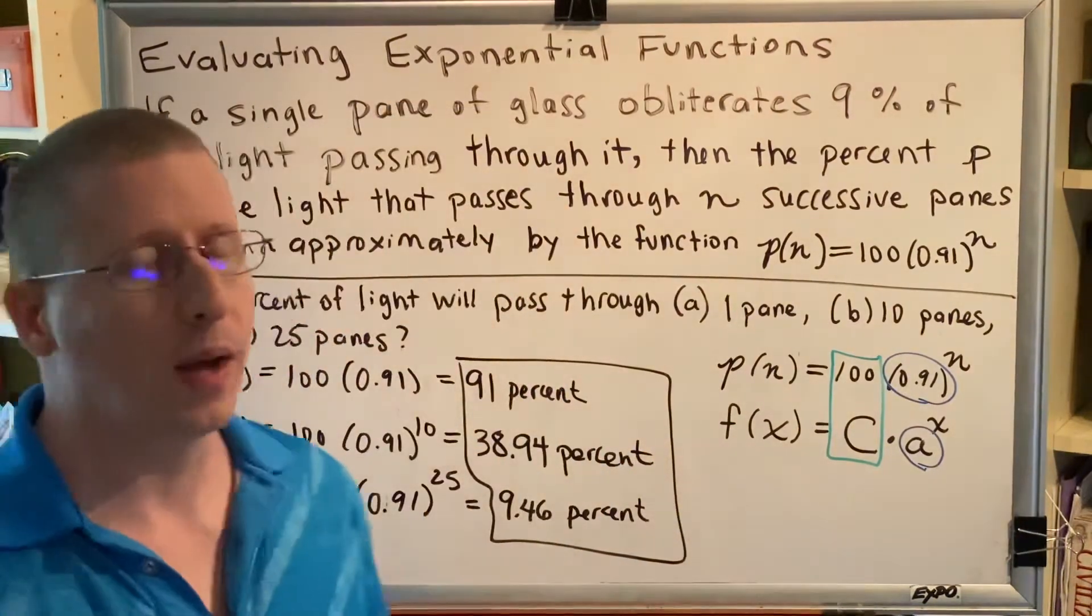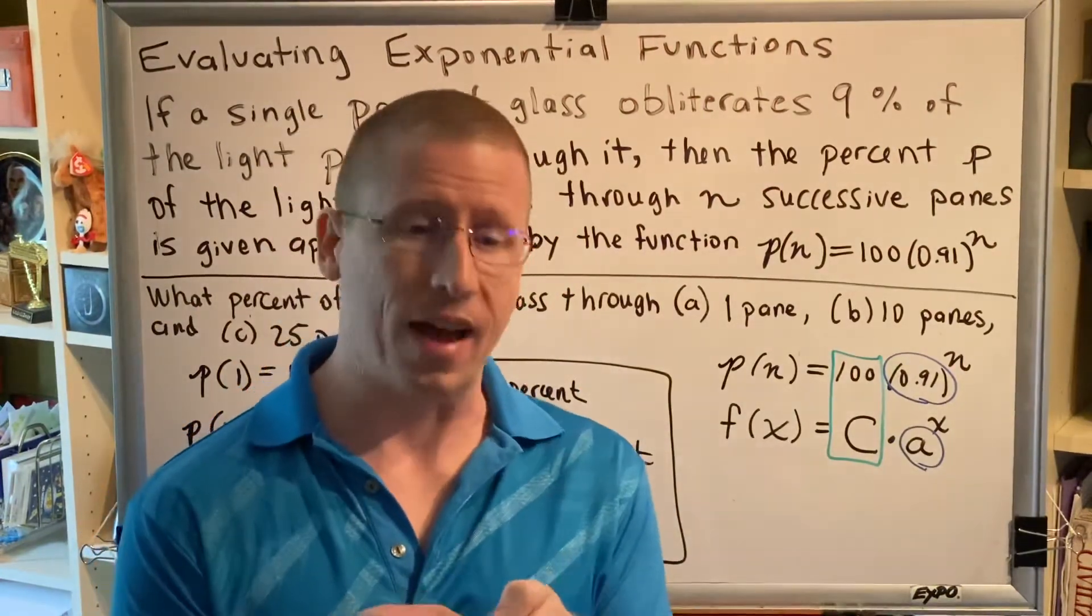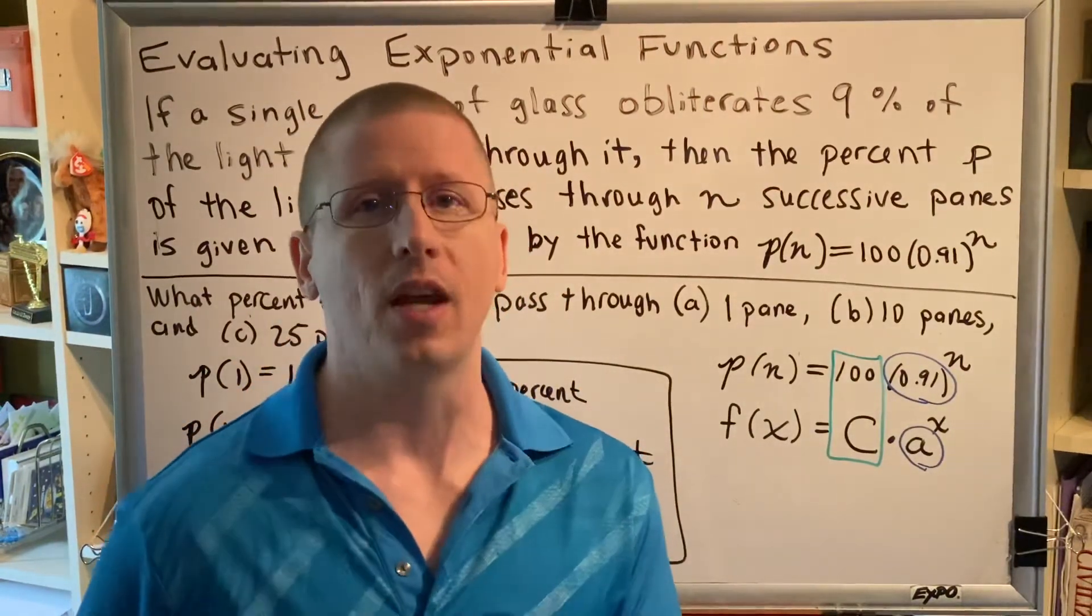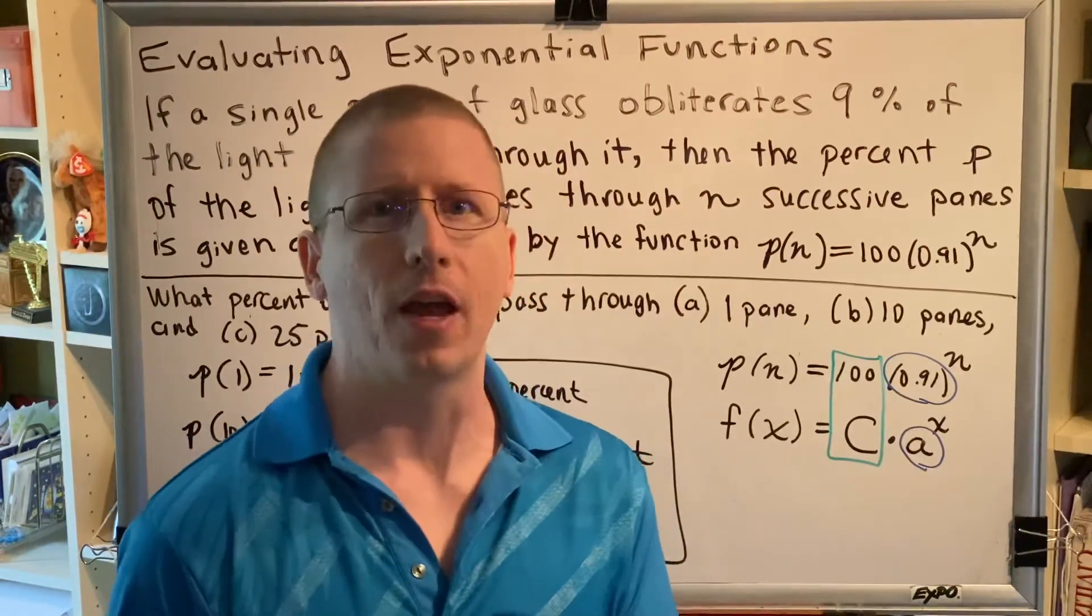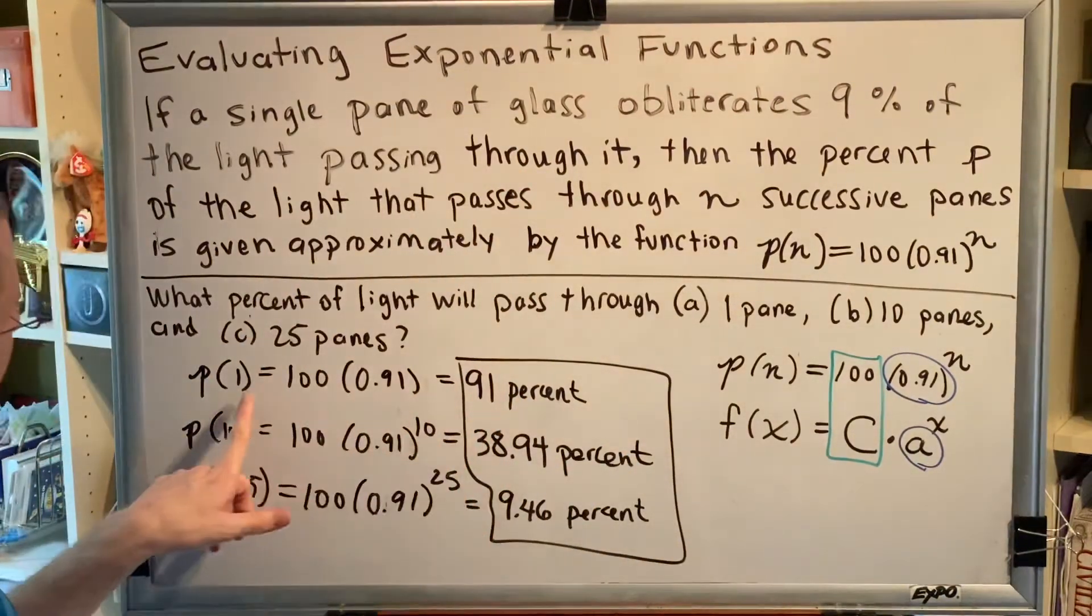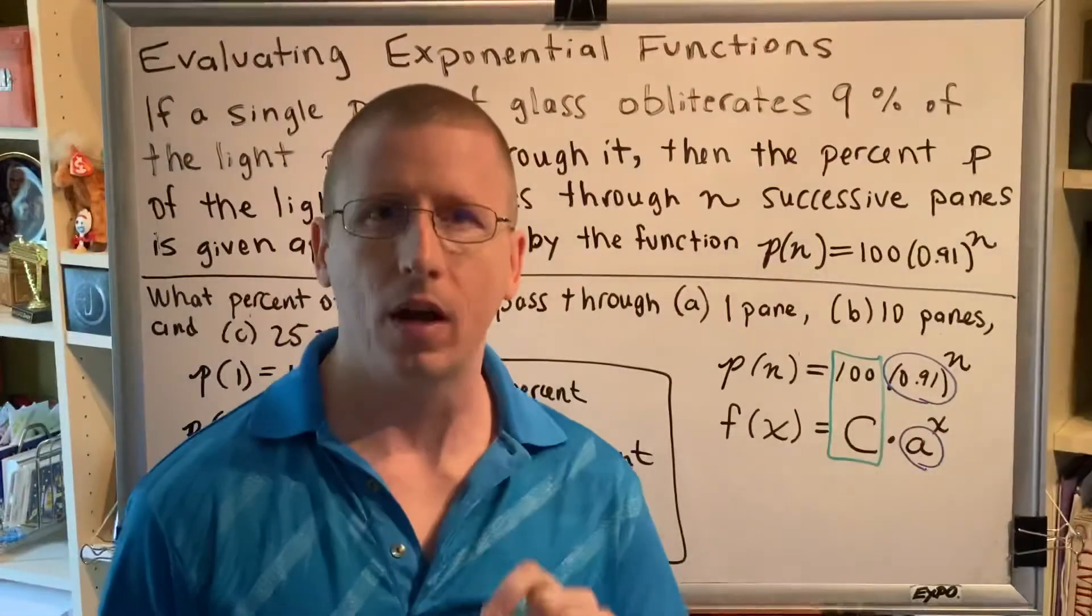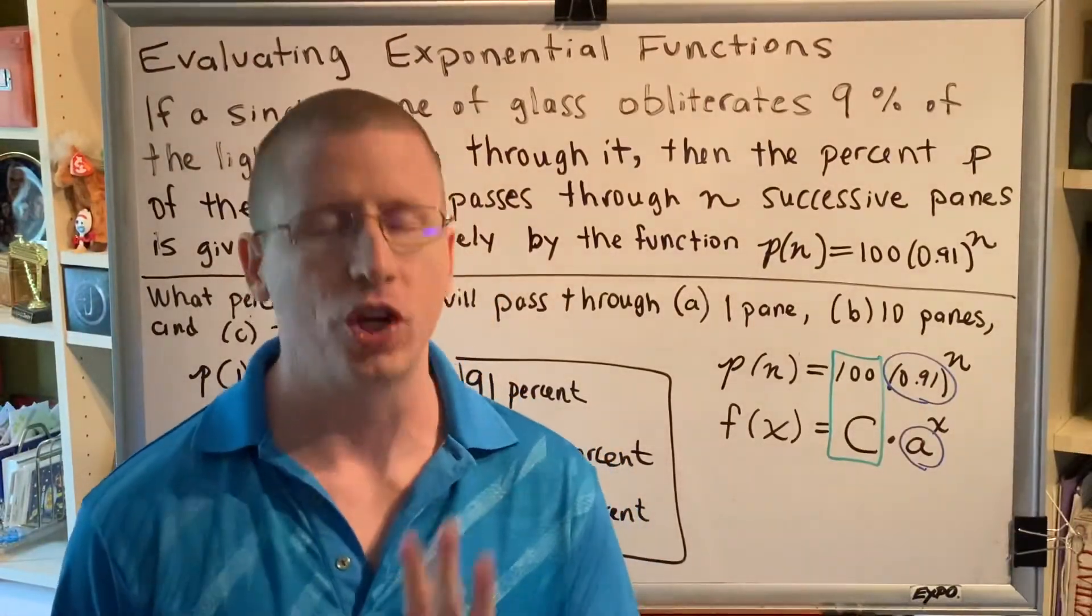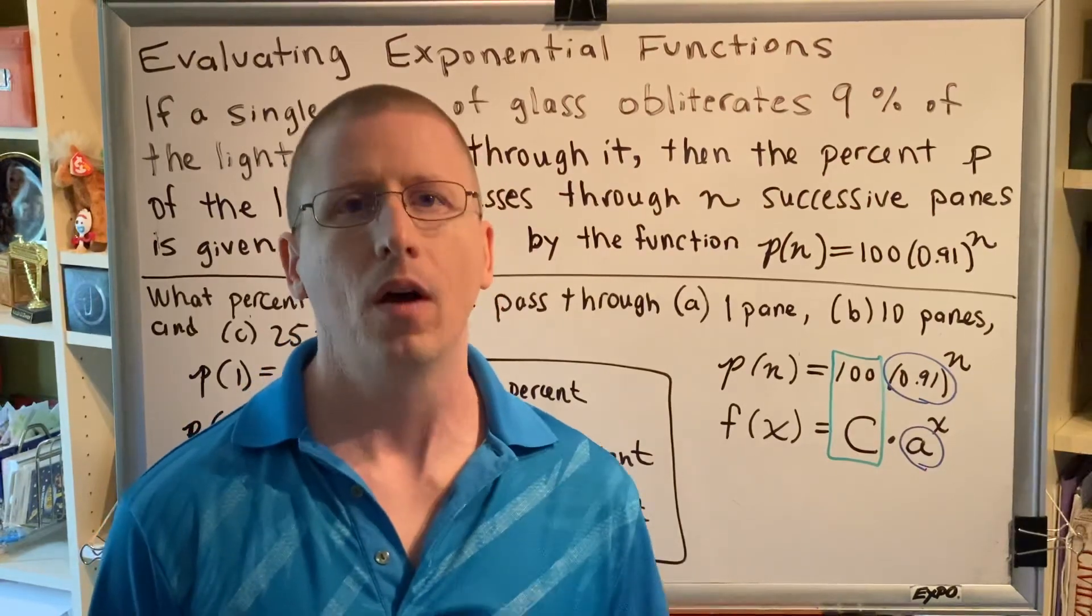So this is a real world example of an asymptote. No matter how much light you shine at a piece of glass, some amount of light is going to get through. And then if you put another pane of glass, some amount of light is going to get through. It will always be smaller, but it will never be zero. So as n increases, the percent of light that gets through gets lower and lower and lower, forever approaching but never reaching zero. A real world example of an asymptote.